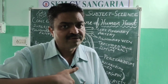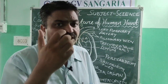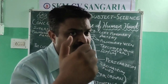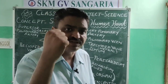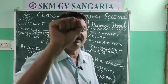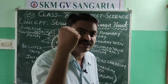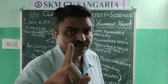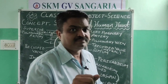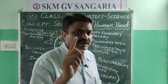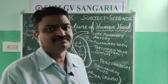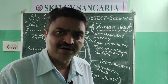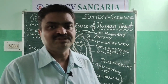The heart is a triangular, muscular, and fist-like organ. It has particular muscles and those muscles are known as cardiac muscle.